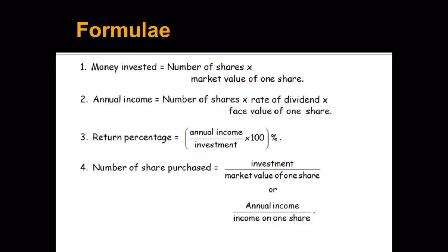Next is annual income — basically what we are getting in return from the money invested in shares. It is calculated as: rate of dividend into number of shares into face value. For example, if the face value is 100 and the rate of dividend is 15 percent, then 15 upon 100 into 100 gives rupees 15 as dividend on one share. If I have 100 shares, then 15 into 100 gives 1500. Please keep in mind that the rate of dividend is always calculated on the face value, irrespective of the market value.